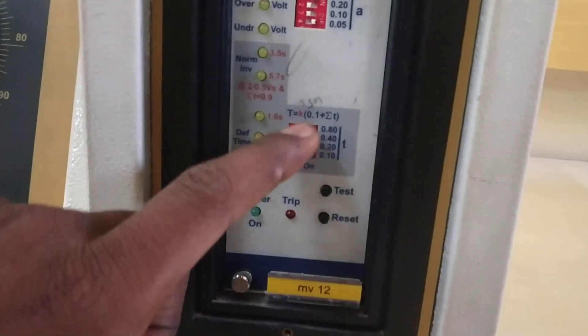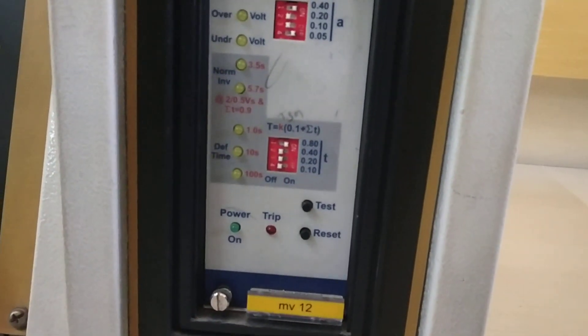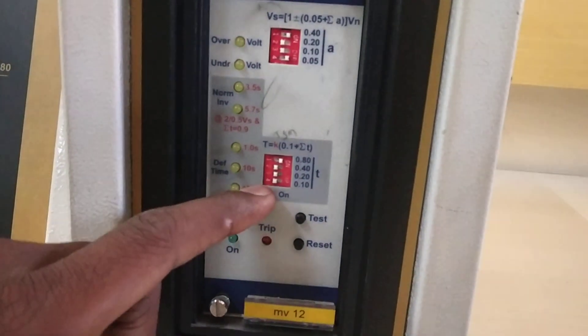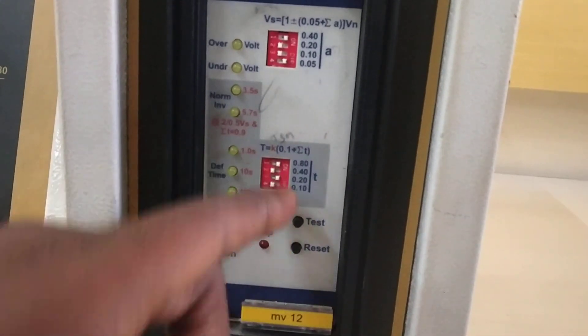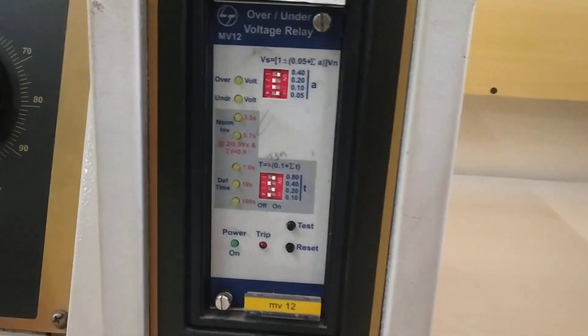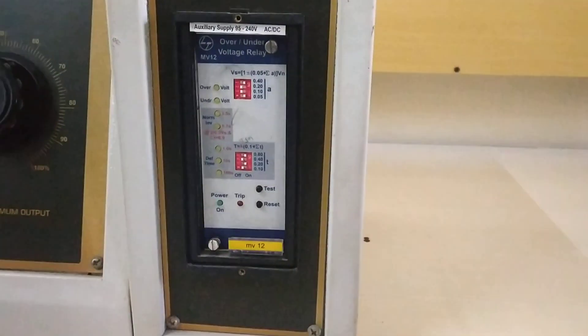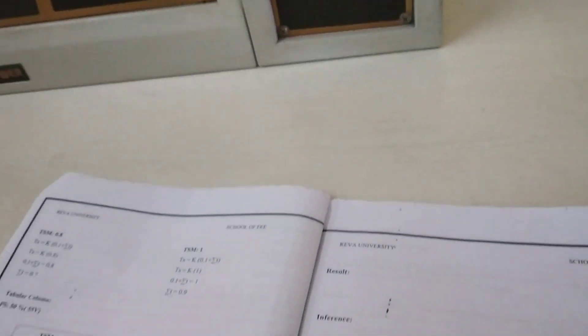You should keep it to 0.8, and if TSM equals 1, you should keep to 0.8 plus 0.2, which is 1. This you should do previously, first thing. When I discuss the tabular column, you will understand better.